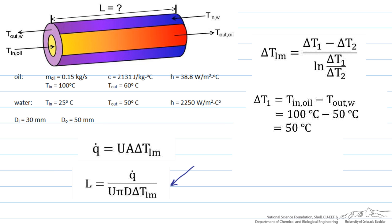Delta T2 is going to be the temperature of the oil exiting the system minus the temperature of the water entering the system. So our delta T2 is going to equal 60 degrees C minus 25 degrees or 35 degrees C.